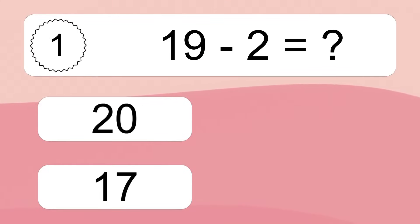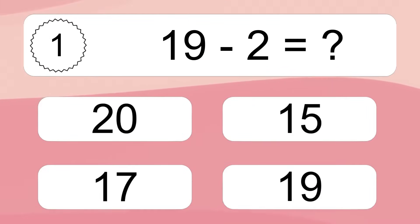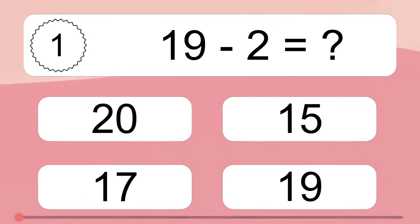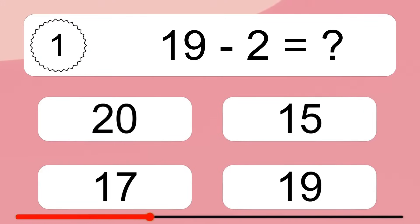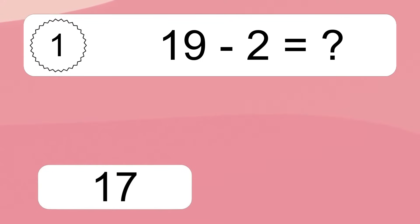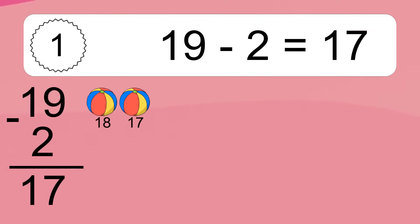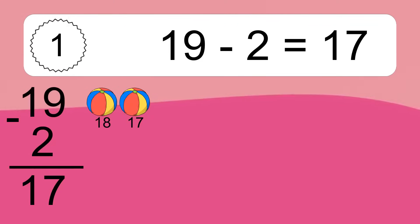19 minus 2 equals what? 19 minus 2 equals 17. Let's count it. 18, 17.